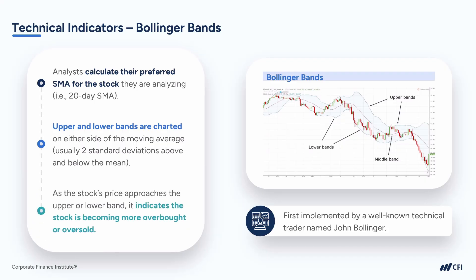As the stock's price approaches the upper or lower band, this indicates that the stock is becoming more and more overbought or oversold. If the stock actually breaks through the band on either side — known as a breakout — the price has done something extremely statistically significant and may be used to signal a trade.